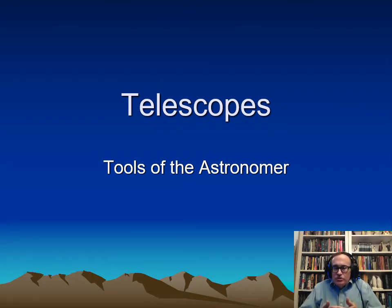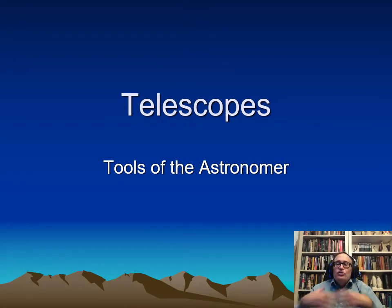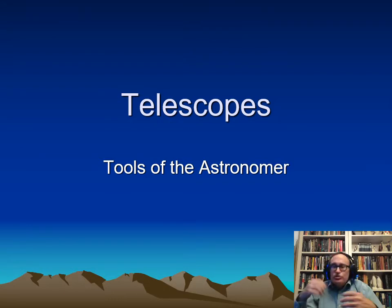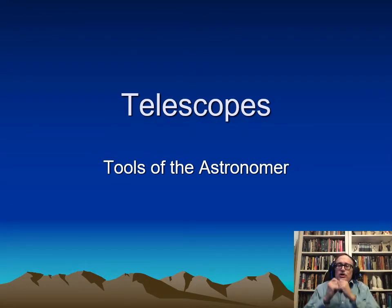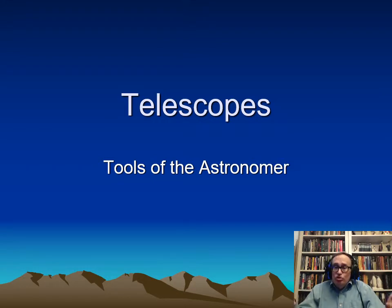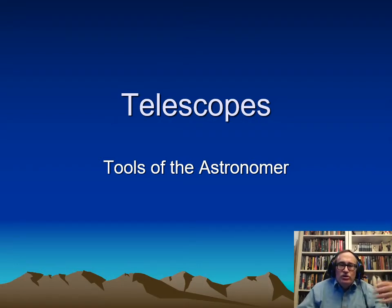We've been discussing telescopes — chapter six introduced the idea of telescopes. Telescopes are tools that gather light, but once you gather the light you need to do something with it. You can use an eyepiece to look through the telescope, but eyes are limited: they see only a narrow part of the electromagnetic spectrum and have limits on the dimmest and brightest things they can detect. This is where other instruments attached to the telescope can do even better.